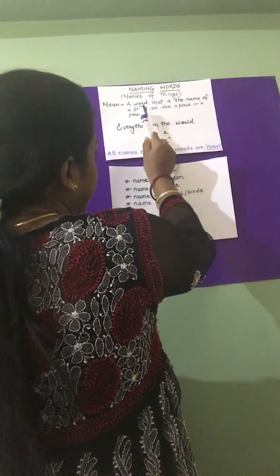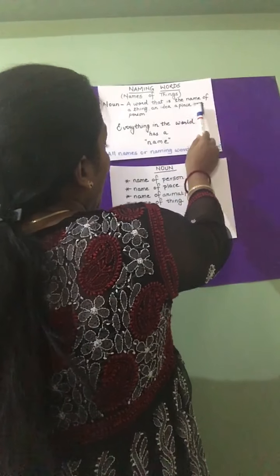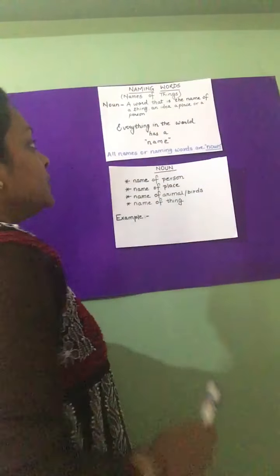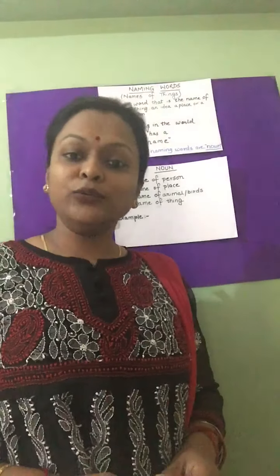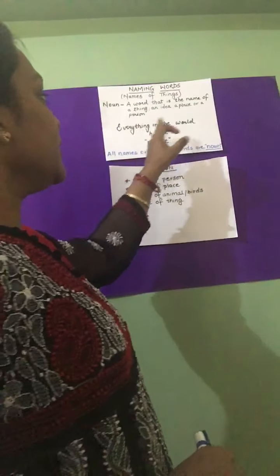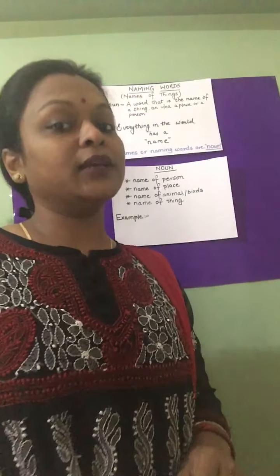In simple language we can say that the name of a person, place, animal, or thing is a noun. Let's repeat together: a word that is the name of a thing, an idea, a place, or a person is a noun. All the naming words are nouns. Everything in the world has a name.